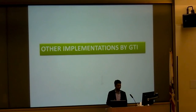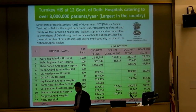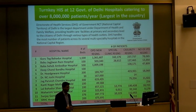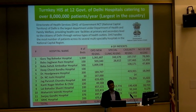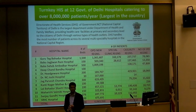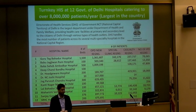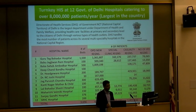We took this forward and implemented it at the Directorate of Health Services hospitals in Delhi. The DHS handles the largest number of patients in the country, and in India that means a huge number. Right now the DHS has 24 hospitals, and we are working in 12 of them. The total number of patients we are handling is about 8 million in a year.